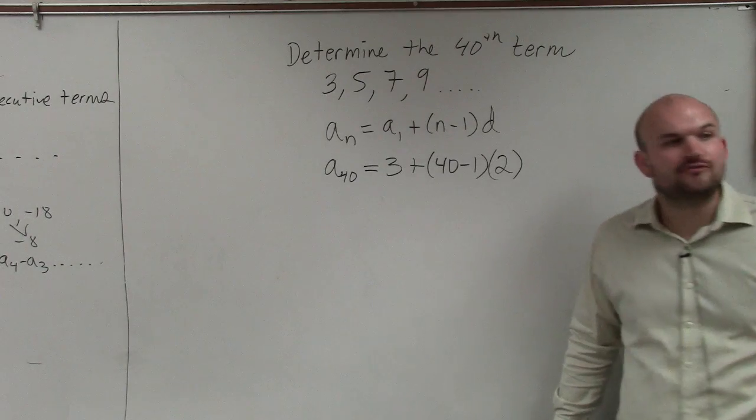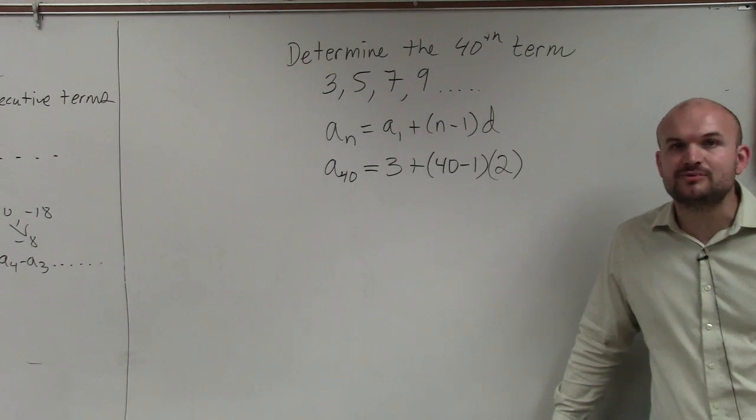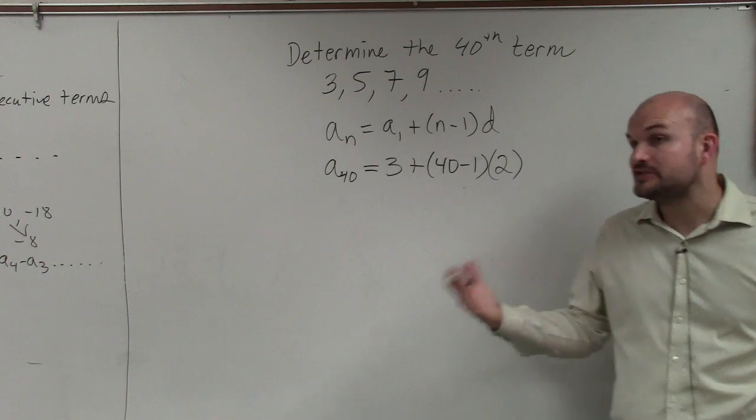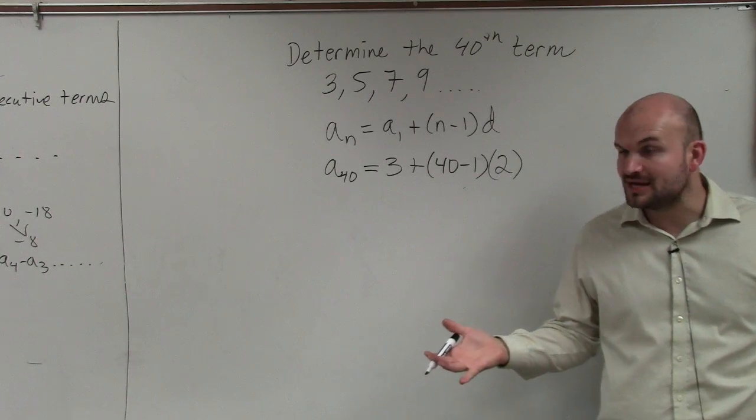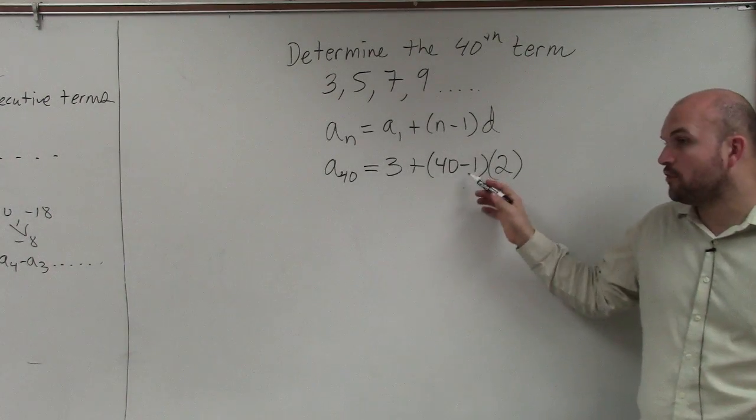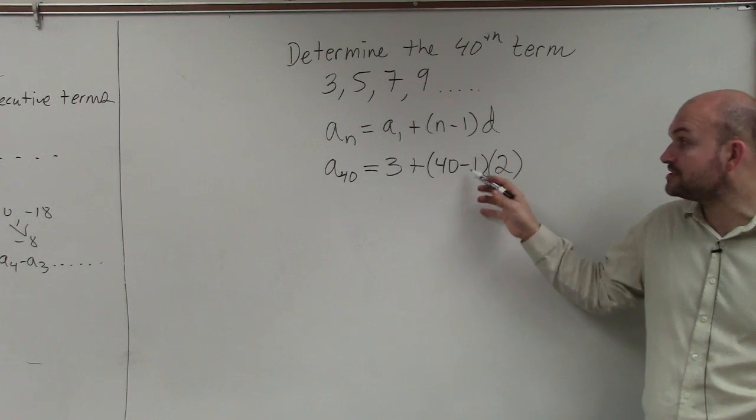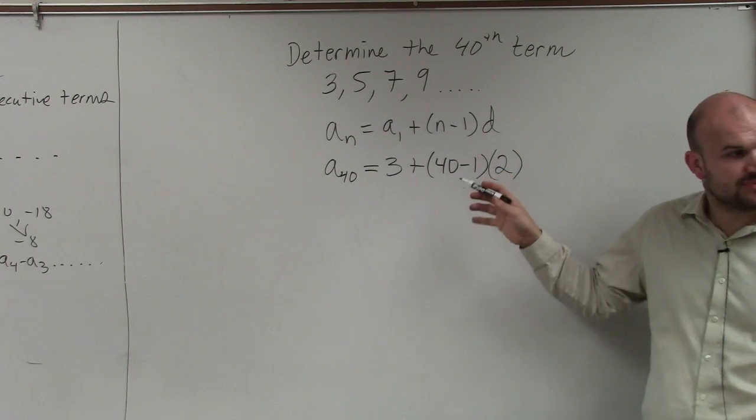So now to find the 40th term, ladies and gentlemen, we have all the information we need. We just now need to simplify. Now make sure we apply order of operations. This is where a lot of students make mistakes. 40, you've got to do inside the parentheses first. 40 minus 1 is going to be 39.